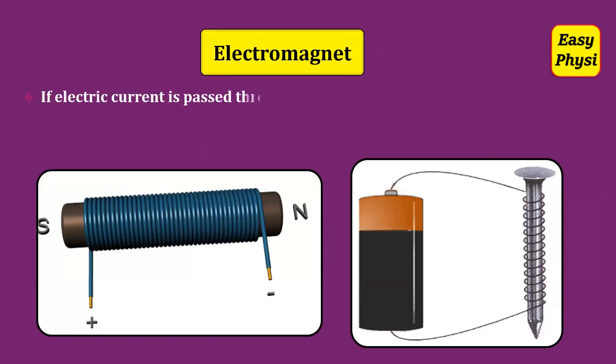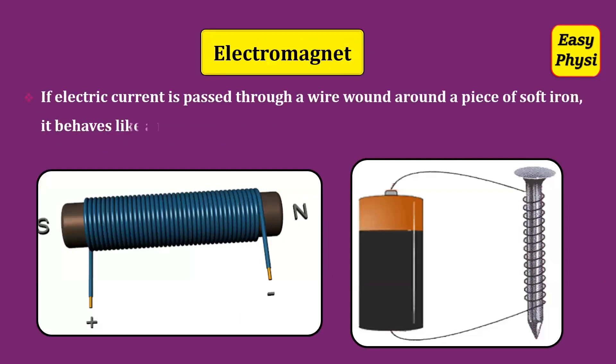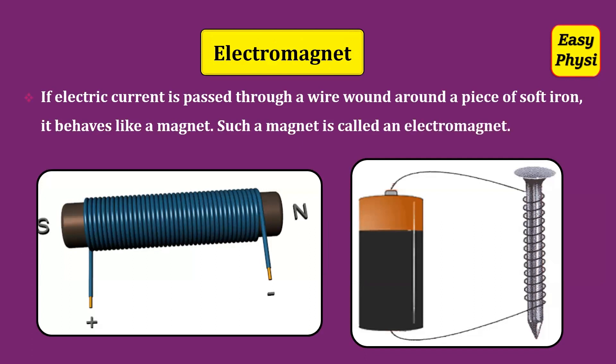Electromagnet: If electric current is passed through a wire wound around a piece of soft iron, it behaves like a magnet. Such a magnet is called an Electromagnet.